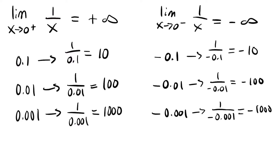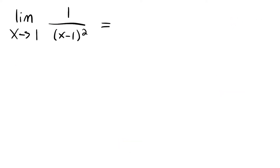If we draw the graph of this function, our results match it well — from the right side of 0 we head towards positive infinity, and from the left side we approach negative infinity. We can apply this method of plugging in numbers close to the value of x to other limits as well, including limits from both sides.